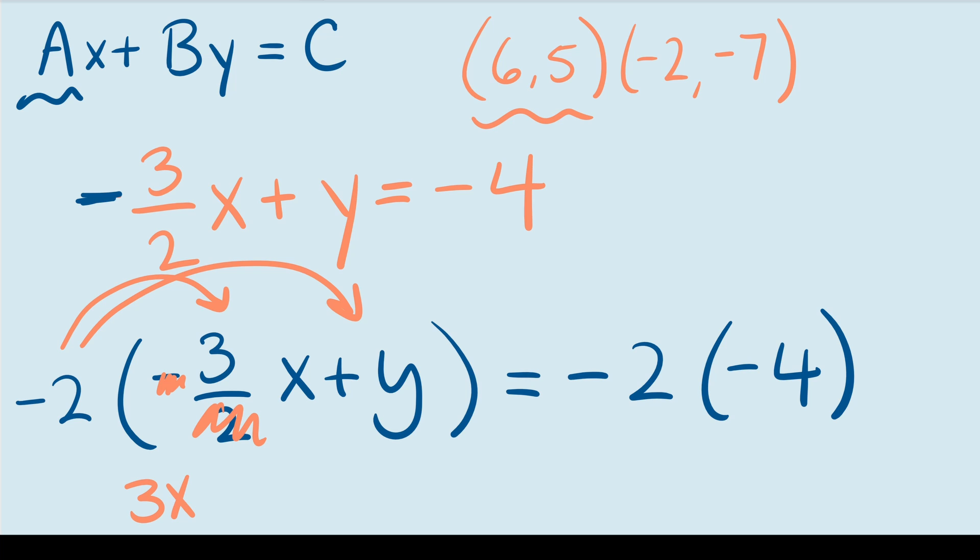For the y term, the positive and negative results in a negative and 2 times y is 2y. Then for the right hand side, I simply have negative 2 times negative 4. The negatives go away and 2 times 4 is 8. So this is our final standard form of the linear equation.